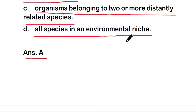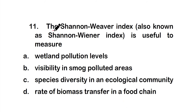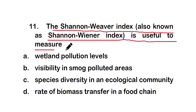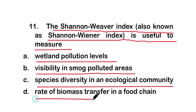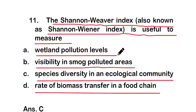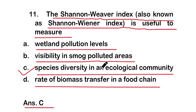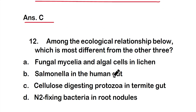Question number eleven: The Shannon-Wiener index is useful to measure — option A: wetland pollution levels; option B: visibility in smoke-polluted areas; option C: species diversity in an ecological community; or option D: rate of biomass transfer in a food chain. The right answer is option C — the Shannon-Wiener index is useful to measure species diversity in an ecological community.